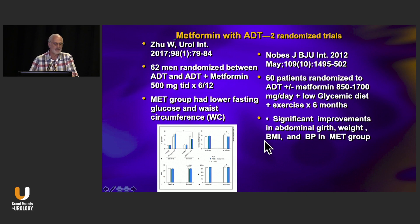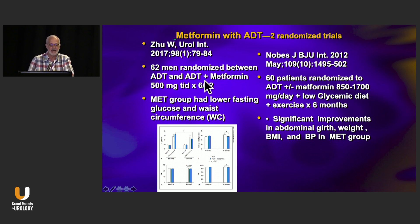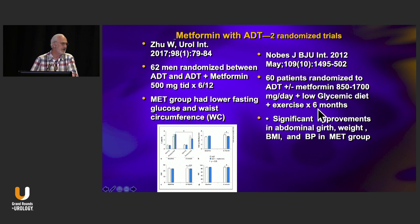The third topic is metformin — there are two small but strongly positive randomized trials. Adding metformin to ADT lowers fasting glucose with no hypoglycemia in non-diabetic men, and also reduces waist circumference, abdominal girth, weight, BMI, and blood pressure. It's innocuous and inexpensive, and I think it makes a lot of sense.